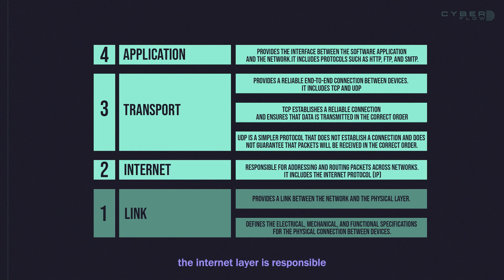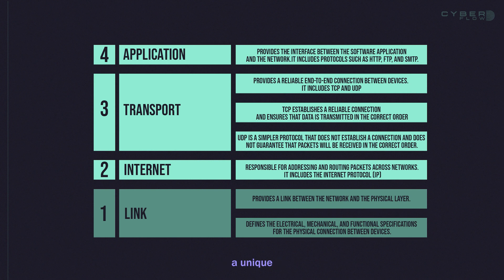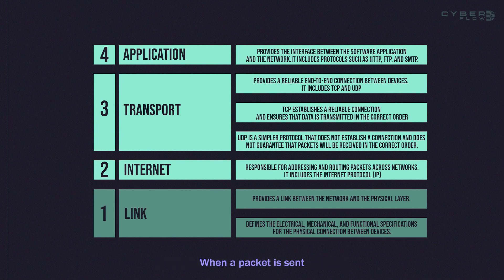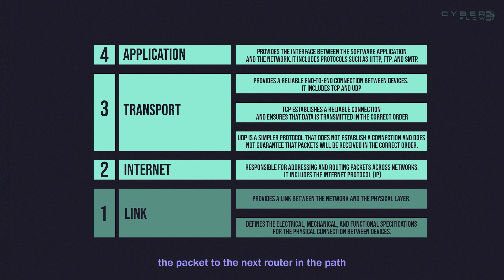The internet layer is responsible for addressing and routing packets across networks. It includes the Internet Protocol (IP), which assigns a unique IP address to each device connected to the internet. When a packet is sent from one device to another, the router examines the destination IP address and forwards the packet to the next router in the path until it reaches its final destination.